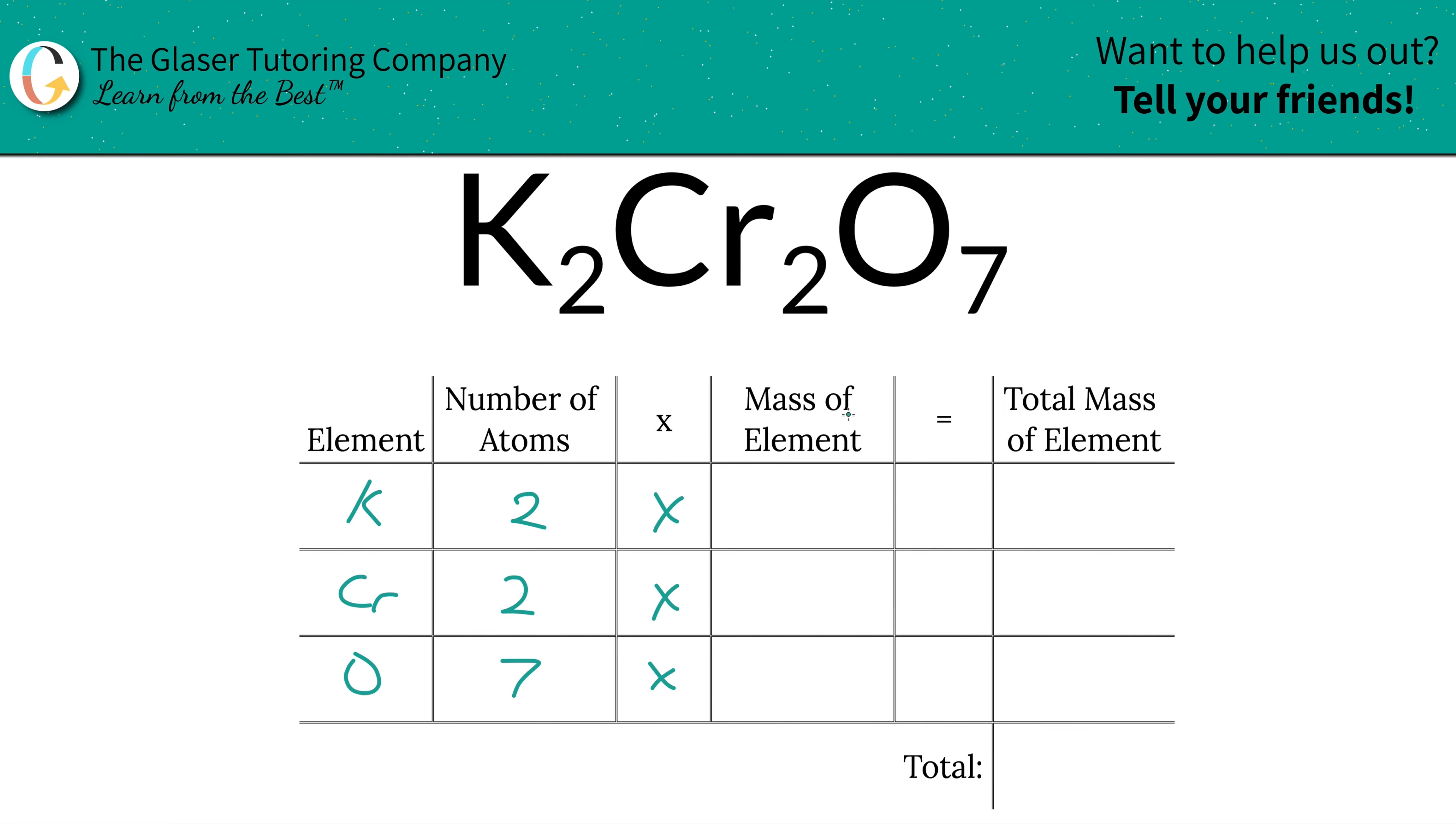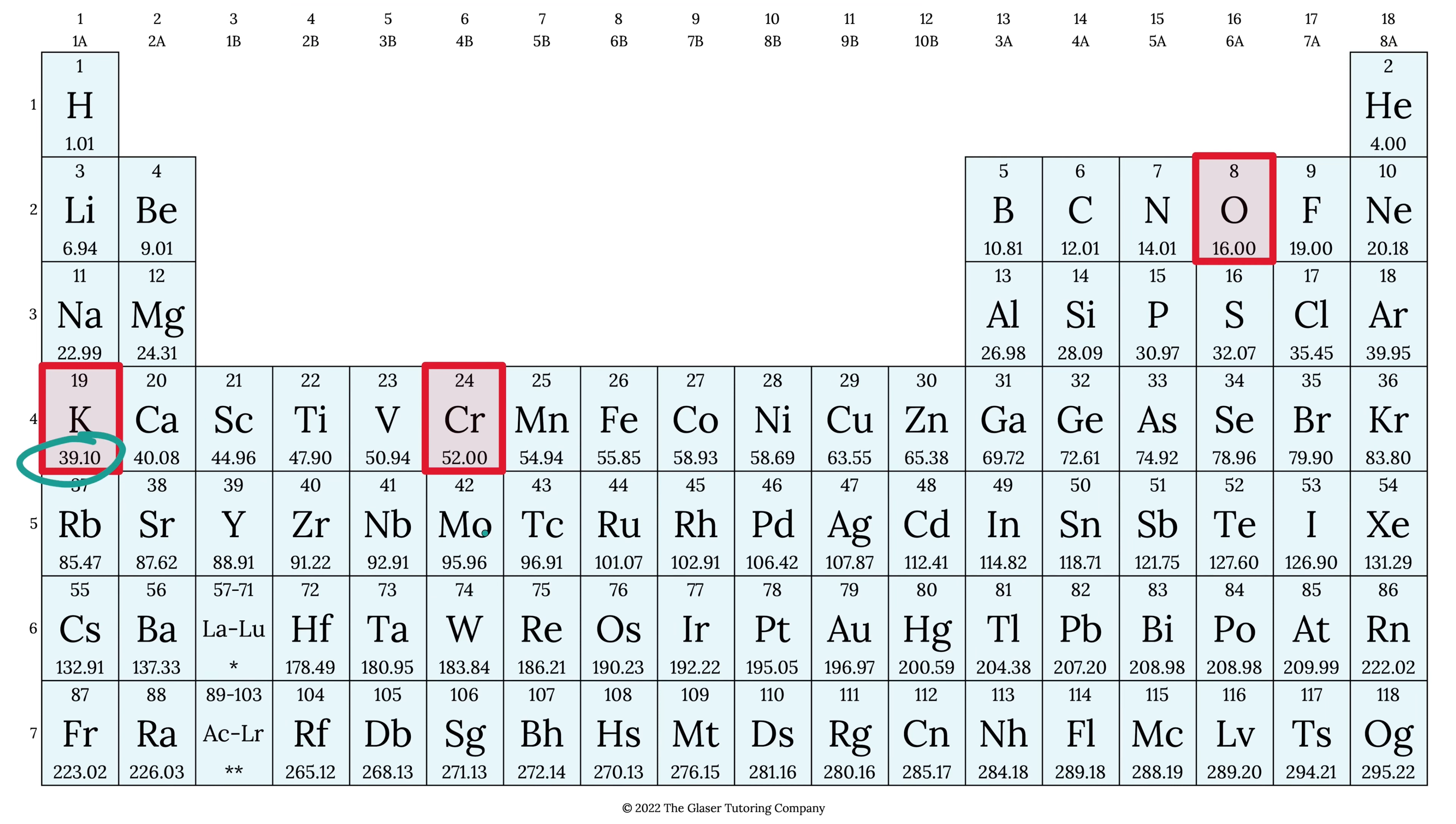Then we're going to take those number of atoms and multiply it by the mass of that particular element. The mass is found on the table, so here you go. Potassium is 39.1, chromium is 52, and oxygen is 16. So those are the masses we are going to write down.